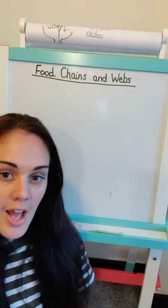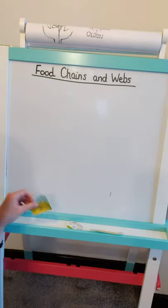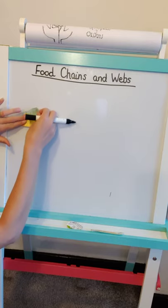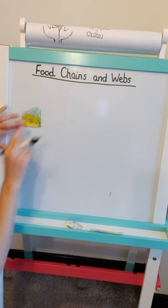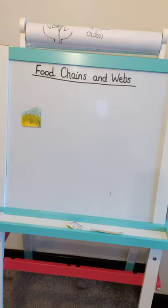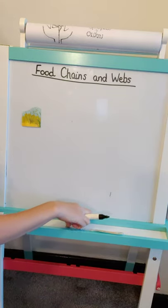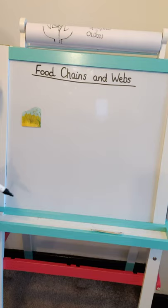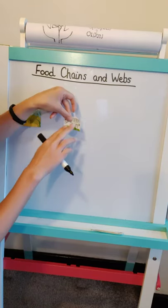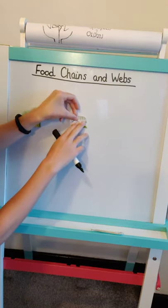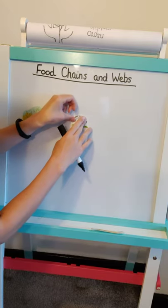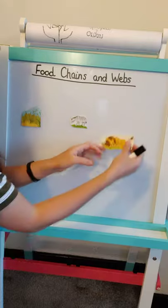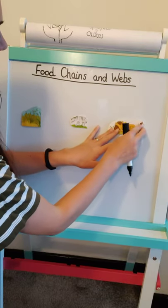So first of all, a food chain. I'm going to start off with some grass. So some grass is there first of all in my food chain, and after the grass we need to go to the thing that eats that grass. In this case we've got the zebra that eats the grass, and then something that eats the zebra is the lion.